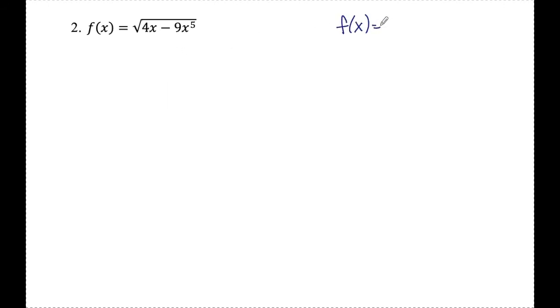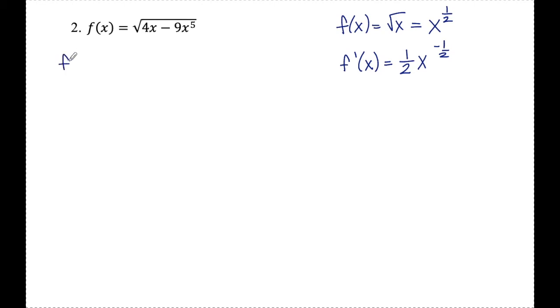Let's look at another example. Number two: f of x is equal to the square root of 4x minus 9x to the fifth. This is comparable to the square root of x. To take the derivative of the square root of x, I rewrite it as x to the half and apply the power rule to get one half x to the negative half. I'll follow the same steps here, rewriting so I don't have a radical: 4x minus 9x to the fifth, to the one half. I look at 4x minus 9x to the fifth as the inside and something to the half as the outside.